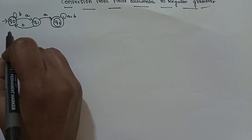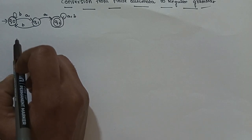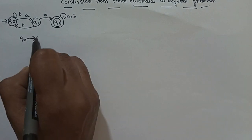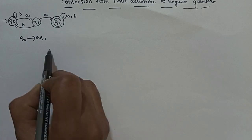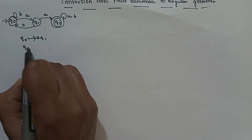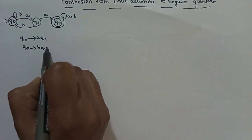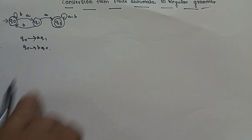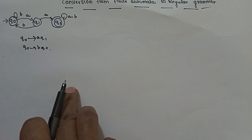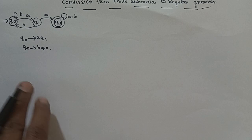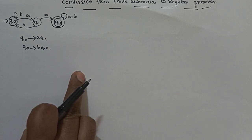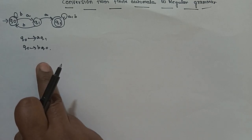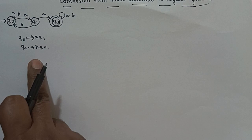First, starting from the starting state — this is the initial state. In the initial state, the first state is Q0. We will apply an input symbol to the state, and then the next state will be changed, so we can identify the state. The next state is Q1.